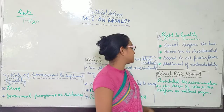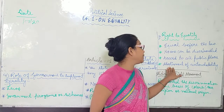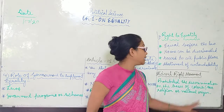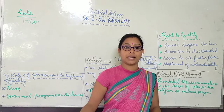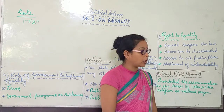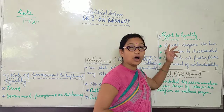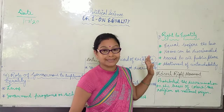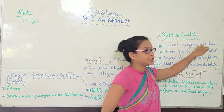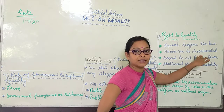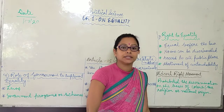The fourth right is the abolishment of untouchability. No person in a democratic country will be discriminated against or called untouchable. We cannot say someone is not worthy of being touched, or that because they belong to a lower caste or Dalit family they cannot be touched — this practice has been abolished. So these were the four basic rights our democratic country offers: equality before the law, no discrimination, access to all public places, and abolishment of untouchability.